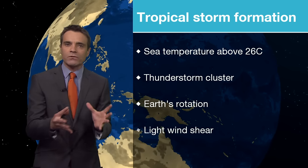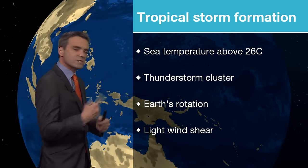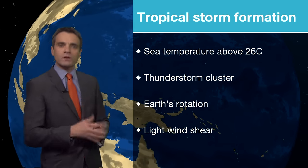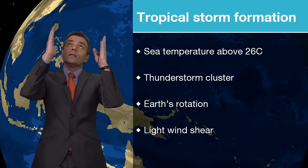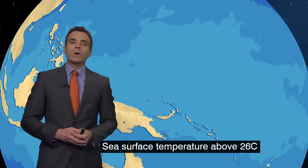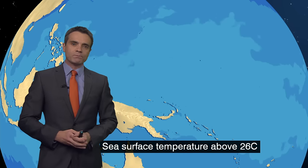We need a cluster of thunderstorms, we need the spin of the earth to be involved, and we need light wind shear — that's to say light winds way up in the atmosphere.